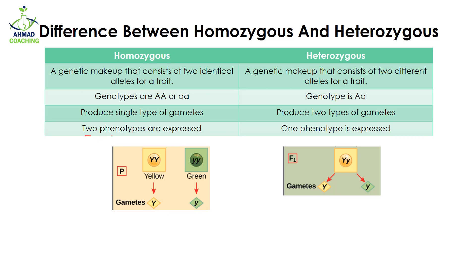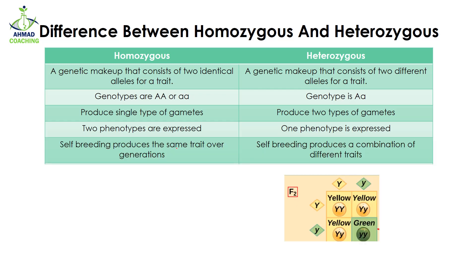Homozygous organisms can express two different phenotypes. When capital Y capital Y is present, the seeds are going to be yellow in color, but when small y small y is present, the seeds are going to be green. So we have two different phenotypes based on the genotype. But in case of heterozygous, only one phenotype is expressed — even though we have capital Y and small y, the seeds are still going to be yellow in color.